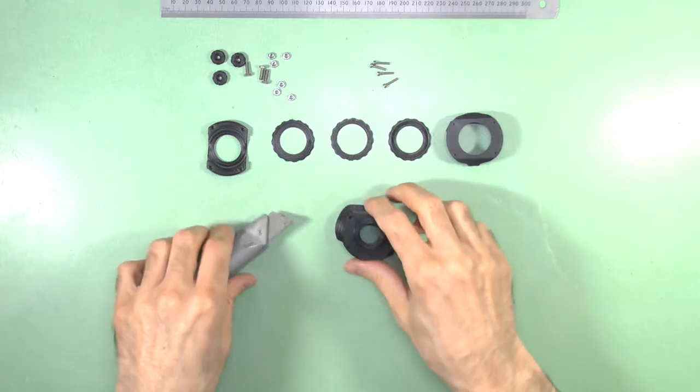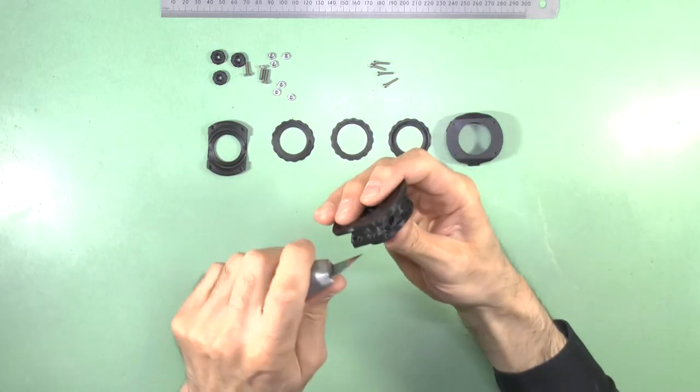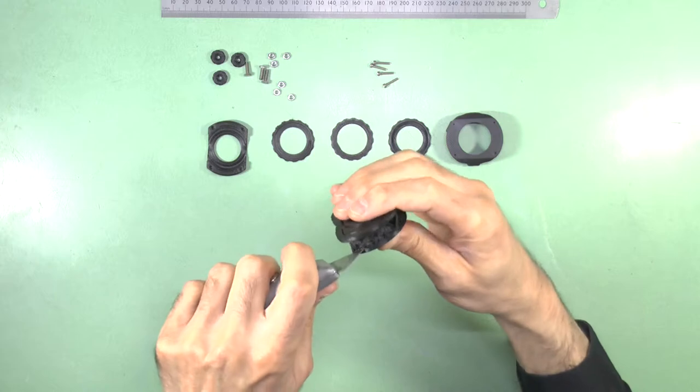First, ensure any support structures and other 3D printing artifacts are removed from the 3D printed parts.